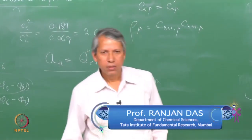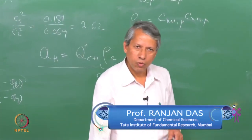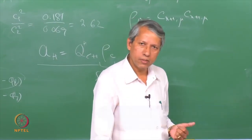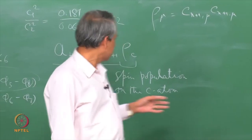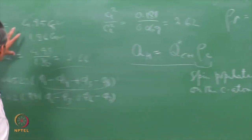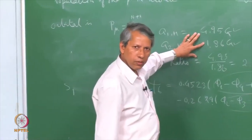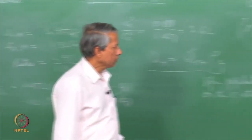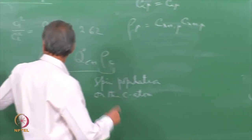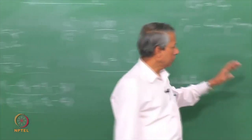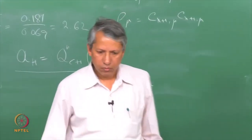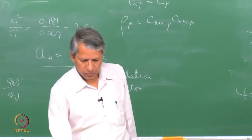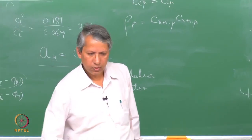In this lecture we have seen how the wave function can be used to predict spin densities, or calculated values can be used to assign various observed hyperfine coupling constants to different nuclei. The wave function can be further improved by mixing in excited state configurations — improving the calculation — when the observed value and the calculated value do not match. With this we come to the end of this lecture.